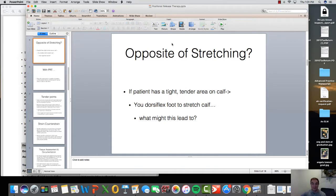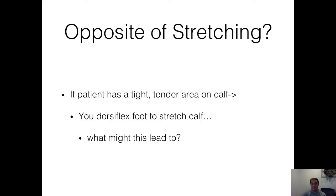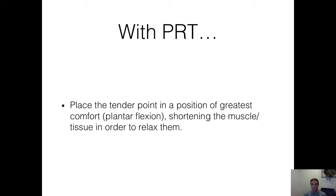PRT is the opposite of stretching. If a patient has a tight, tender area on the calf, you would dorsiflex the foot to stretch the calf — but what might that lead to in other areas of the lower leg? With PRT, you'd place the tender point in a position of greatest comfort, which is plantar flexion — shorten the muscle tissue in order to relax it. You might add inversion or eversion of the ankle, or do something with the toe, and possibly some compression or distraction depending on the technique.